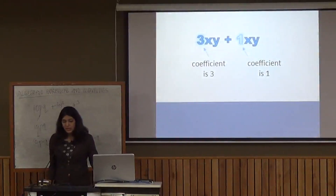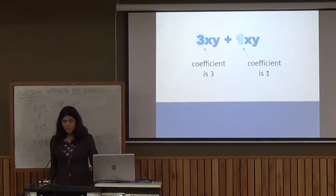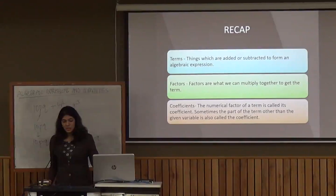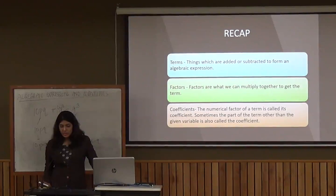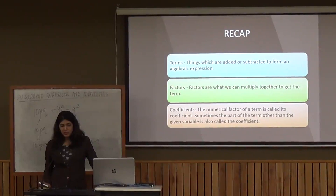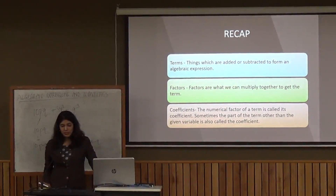Again, in the expression 3xy plus 1xy, for the first term the coefficient is 3, and for the second term the coefficient is 1. To revise: terms are the things which are added or subtracted to form an algebraic expression. Factors are what we multiply together to get the term. The numerical factor of a term is called its coefficient. Sometimes the part of a term other than the given variable is also called the coefficient.